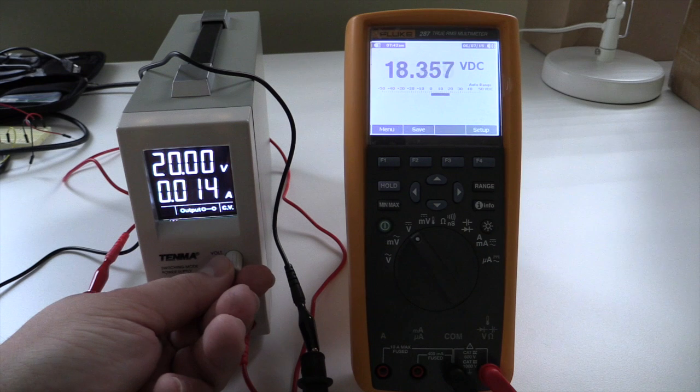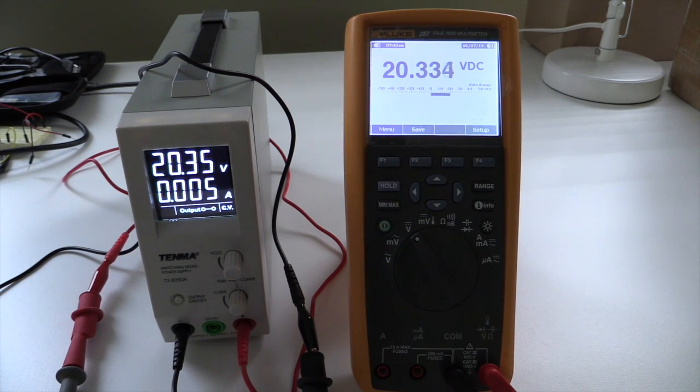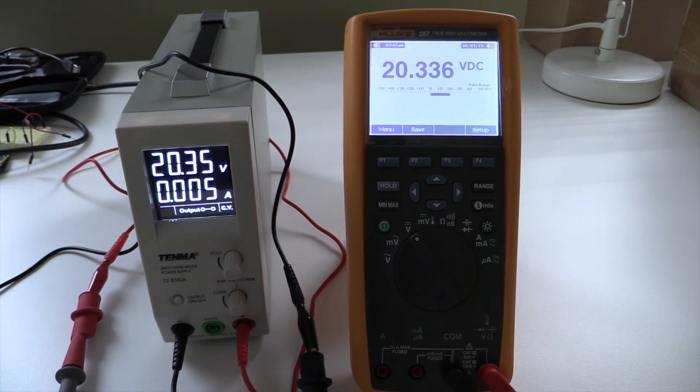And if I set it all the way up to 20, 20.35, so fairly consistently, a third of a volt more than what the screen reads.